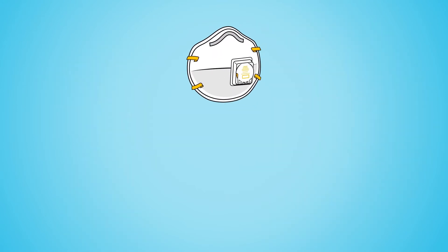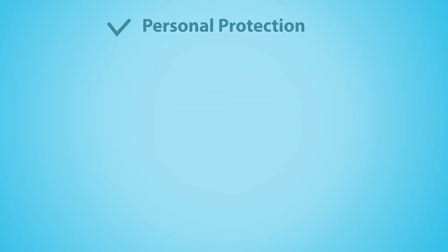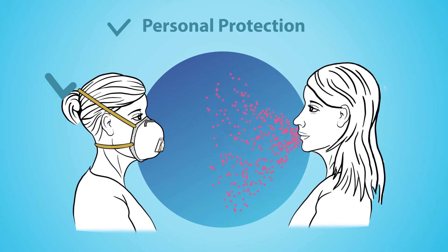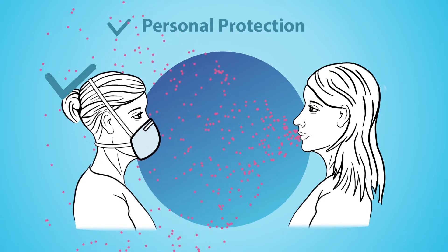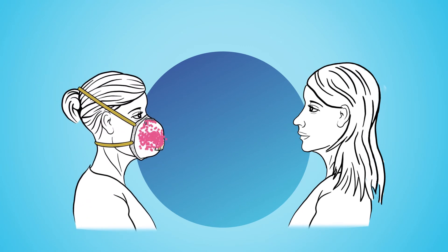An N95 respirator with an exhalation valve achieves personal protection but not source control protection. This means it provides the same level of protection to the wearer as one without a valve. However, because the exhalation valve allows unfiltered exhaled air to escape, it puts the people around you at risk if you are an asymptomatic carrier.